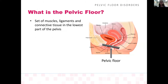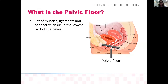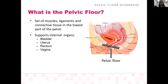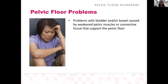So what is the pelvic floor? The pelvic floor is a set of muscles, ligaments, and connective tissue in the lowest part of our body. This entire area holds the bladder, the vagina, and the rectum in place. They support the bladder, uterus, rectum, and vagina to keep them up and help control pelvic organ functioning — the most common three functions being voiding, bowel movement, and vaginal intercourse and childbirth.